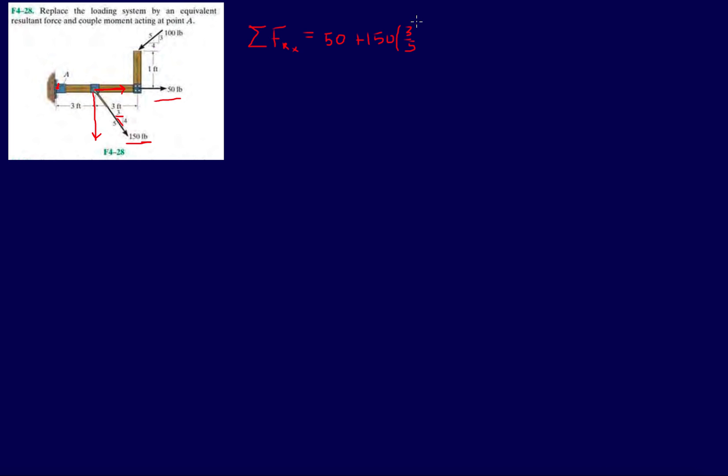And then we have another force here that we have to split off into its X and Y component, which is gonna be this 100 pound force. It's pointing down to the left, so negative. Minus 100, and the 3-4-5 triangle tells us that it's gonna be four-fifths because four is opposite or parallel to the X axis.